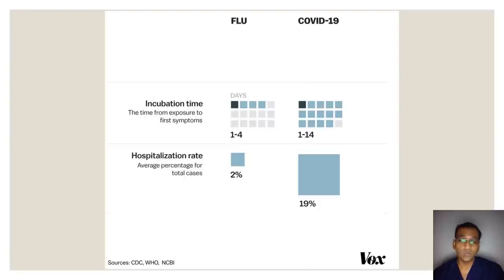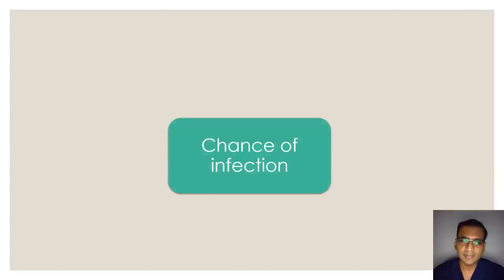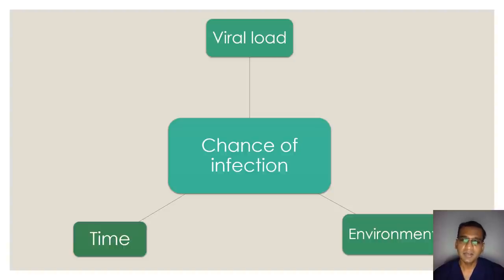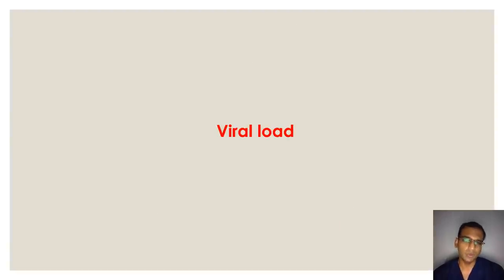Now we get into what we are here to talk about: prevention. The chance of you getting infected is dependent on three factors — viral load, the environment, and time. I'd like you to remember this throughout your everyday life. Let's deal with them one at a time: first viral load, then time, then environment. Viral load refers to the number of viral particles needed for you to get infected. There is a growing consensus that this number is about 1,000 viral particles.